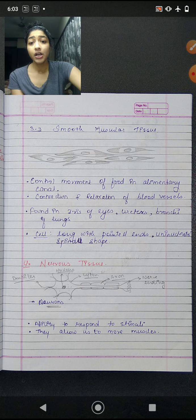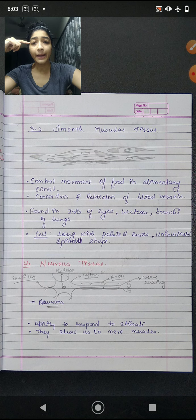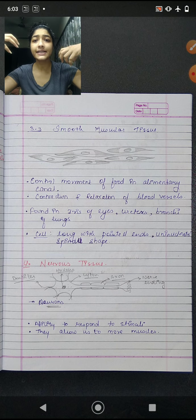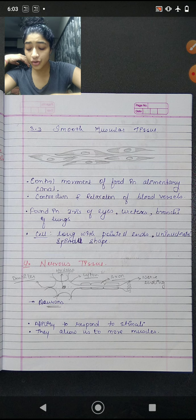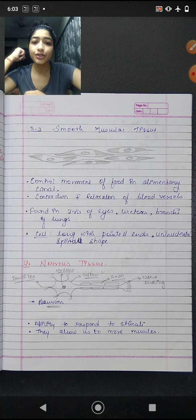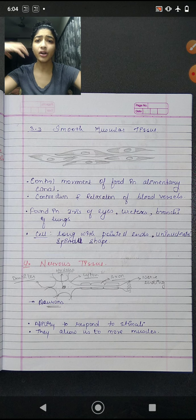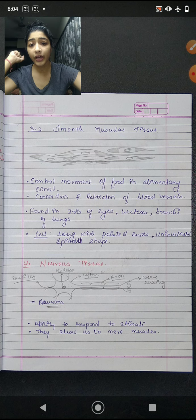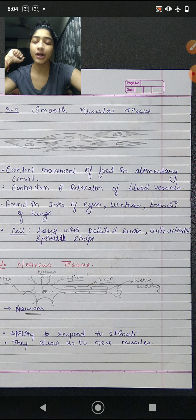Next is smooth muscle. Smooth muscles are present in the iris of the eyes, uterus, and bronchi of the lungs. They control the movement of food in the alimentary canal and the contraction and relaxation of blood vessels. For example, when we go from a light room to a dark room, our iris adjusts automatically — that is not in our control. The cells are long with pointed ends, uninucleated, and spindle-shaped — not cylindrical.